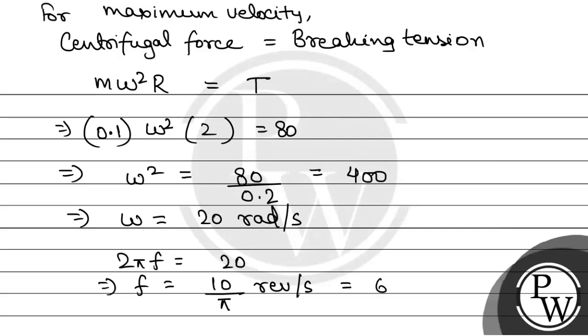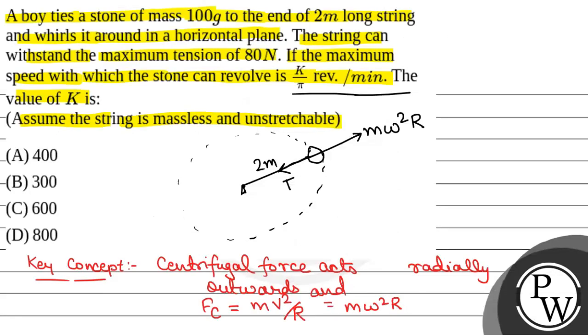Or, to change it into minute, that will be 600 by pi revolution per minute. So k will be equal to 600. So the value of k is 600, which is option C.